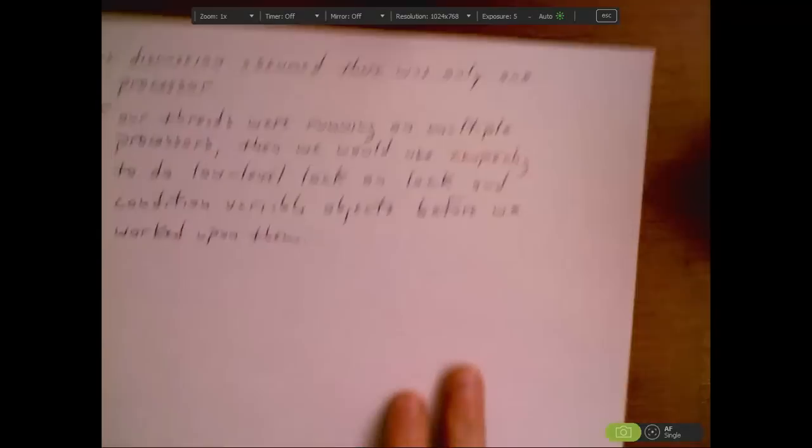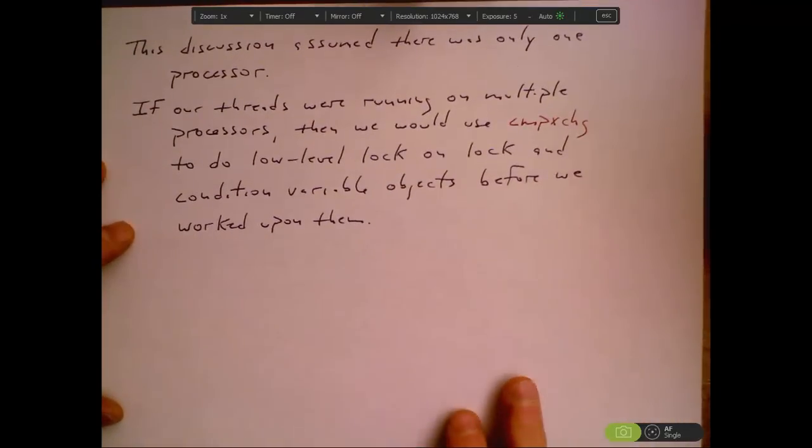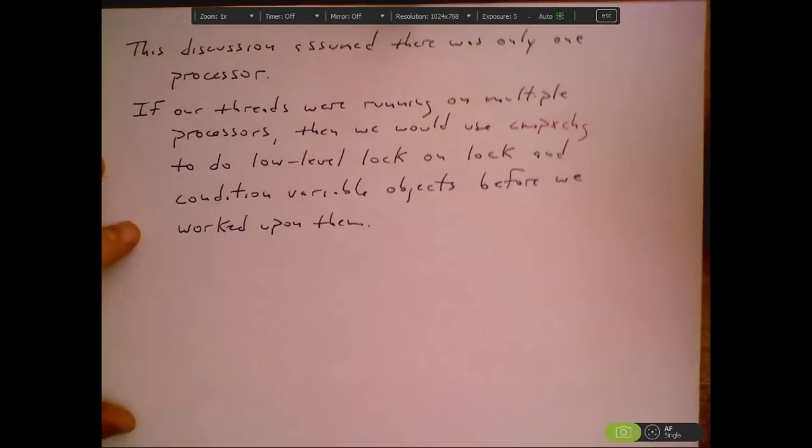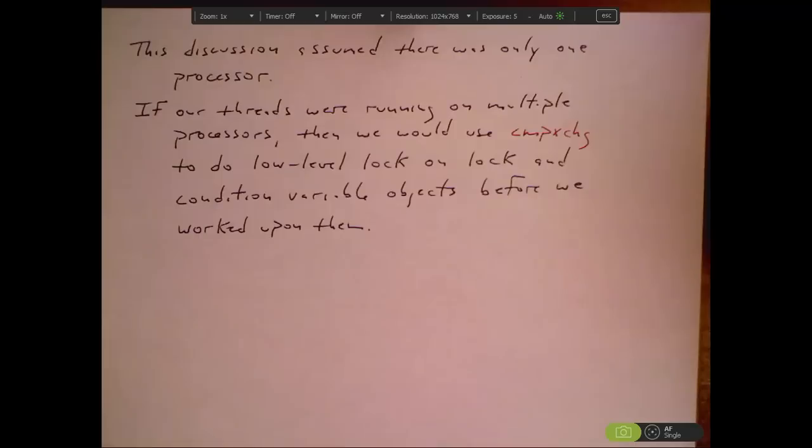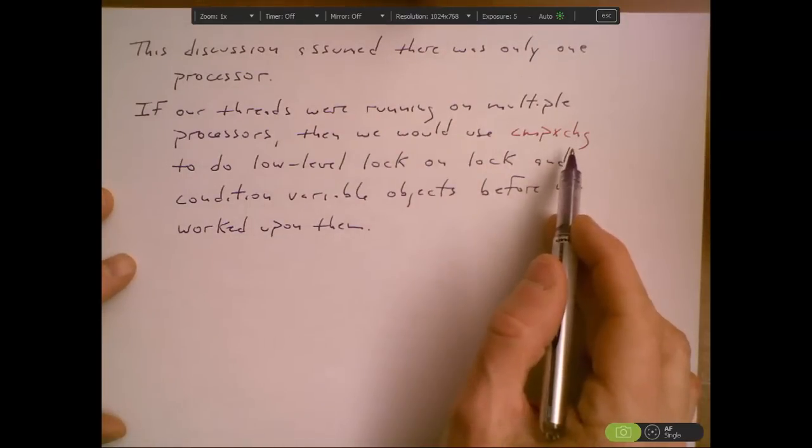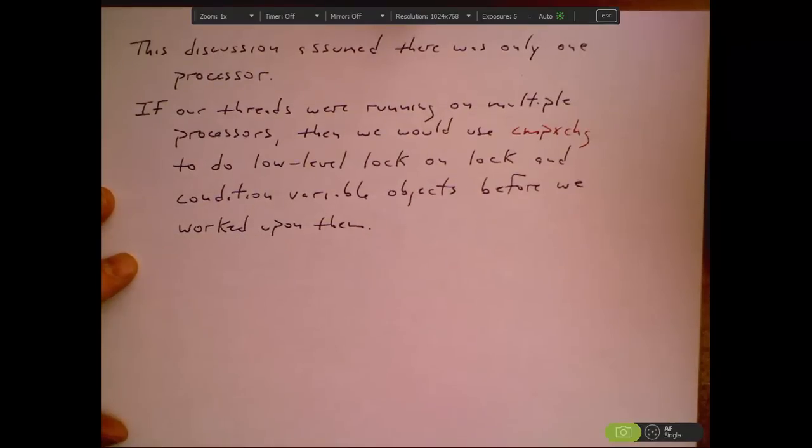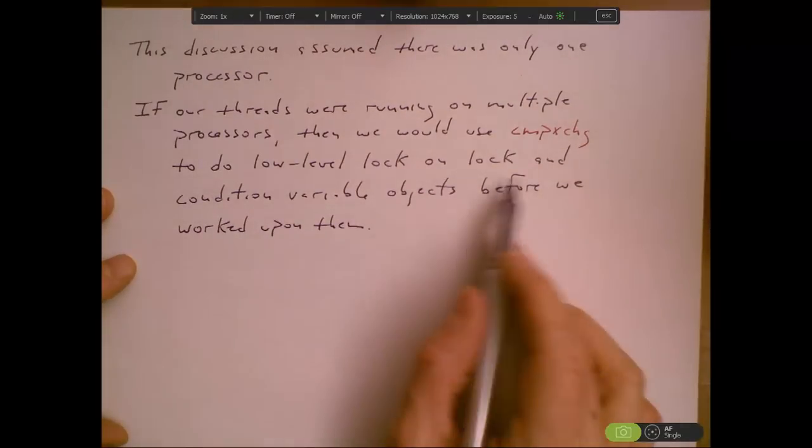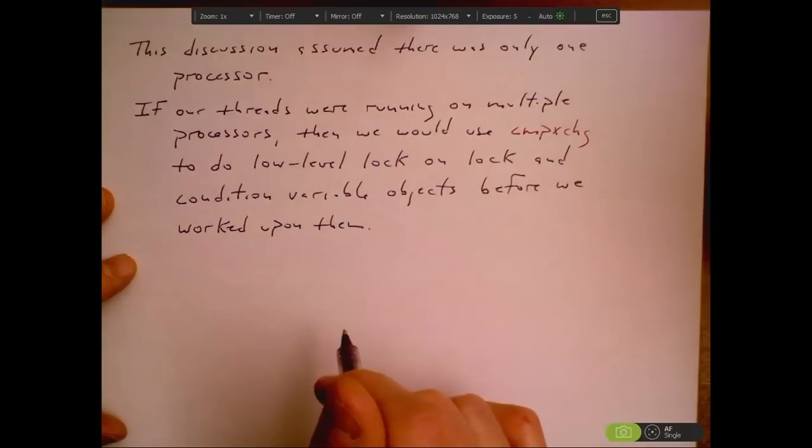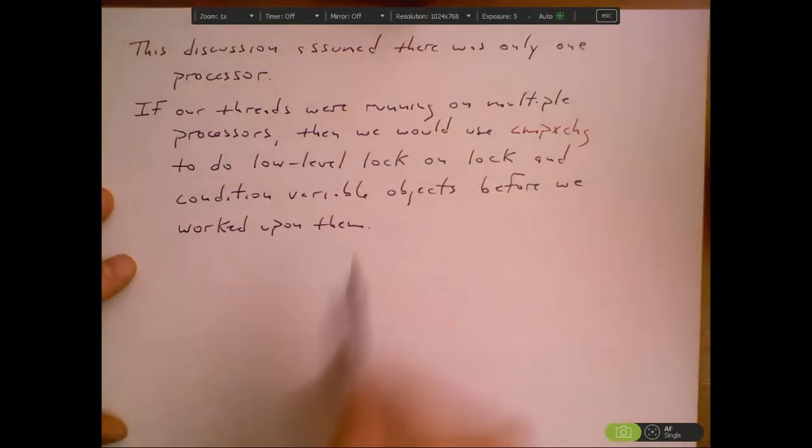All right. Finally, this discussion has been based upon assuming that we're implementing threads on a single processor. But if we were building a threads library with mutexes and condition variables that we're going to run on multiple processors, then we would use the compare and exchange instruction to do a low level lock on these lock and condition variable objects so that we know we had exclusive control of these objects before we started working on them.